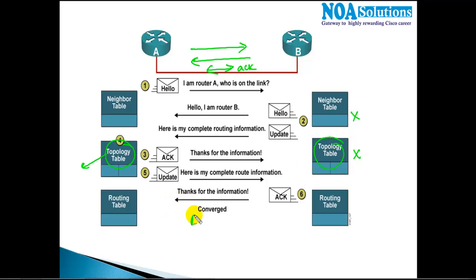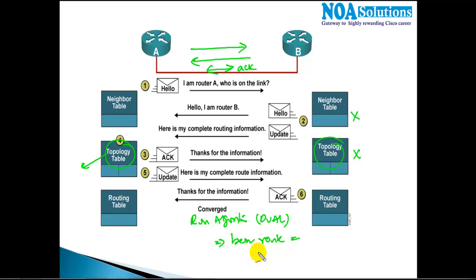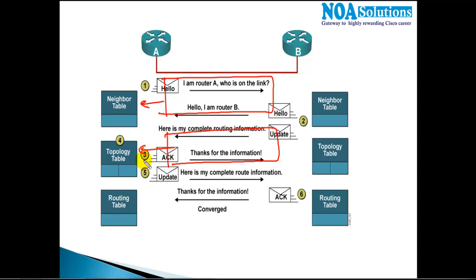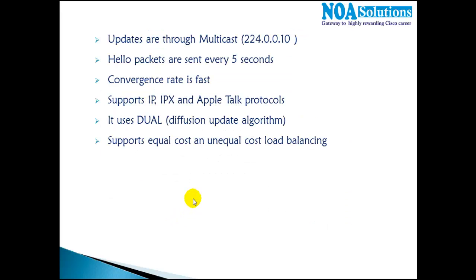After the topology table is built, EIGRP runs the DUAL algorithm to calculate the best route — best route based on bandwidth and delay. The best route is then written into the routing table, and actual forwarding is based on that routing table. So the initial process is: exchange hellos to become neighbors, exchange routing info to build the topology table, then calculate and install the best route.